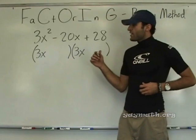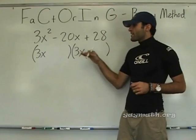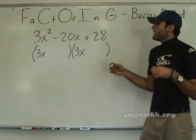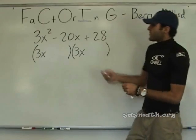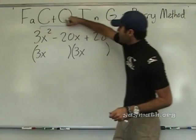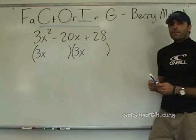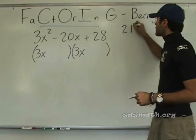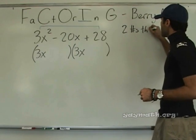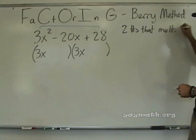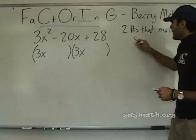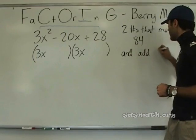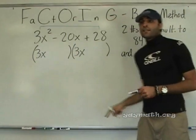Some people said they're more process-oriented, so this is the process. You start with the same number. Then you multiply these two. What do we get when 3 times 28? 84. So then we have two numbers that multiply to 84 and add to the middle number — negative 20.